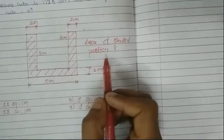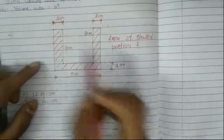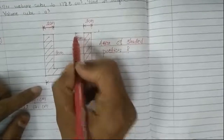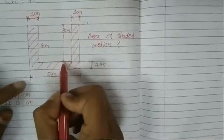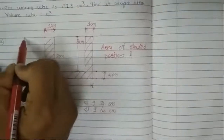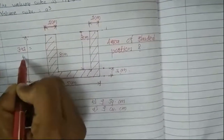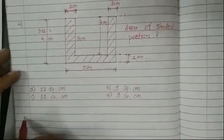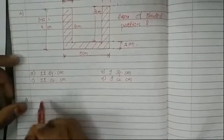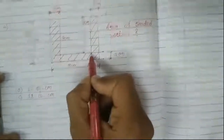Now find the area of the shaded portions. This is the figure: it has a width of 1 centimeter, a length of 5 centimeters. The heights at different points are 3 centimeters and 1 centimeter. So the total height is 3 plus 1 equals 4 centimeters. We will try the first method.